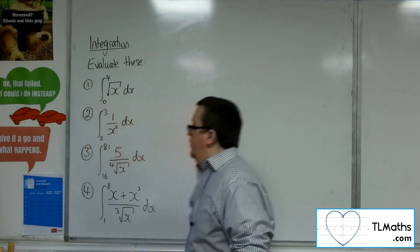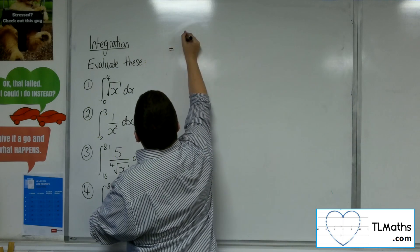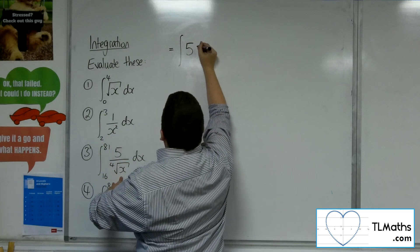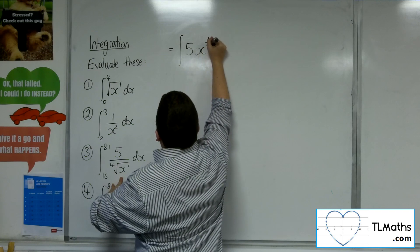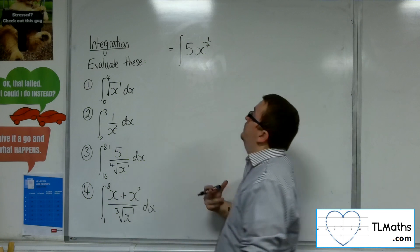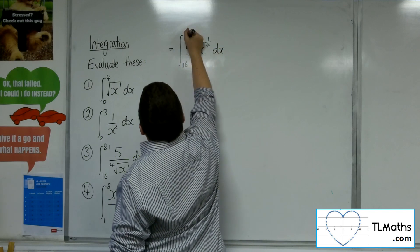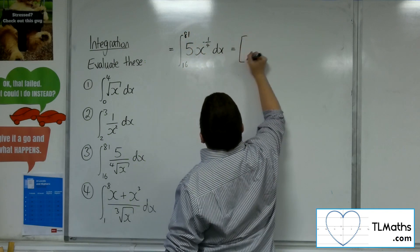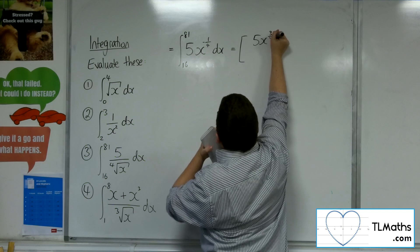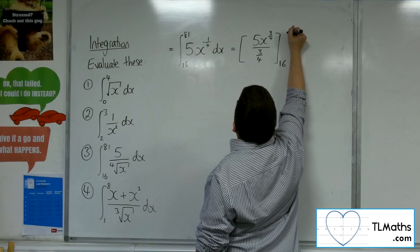Let's have a look at number three. I can't integrate it like that, so I'm going to rewrite it as five lots of one over the fourth root of x — so five lots of x to the minus one quarter — dx, evaluated between 16 and 81. I want to add one to the power: minus one quarter plus one is three quarters. Divide by the new power, evaluated between 16 and 81.